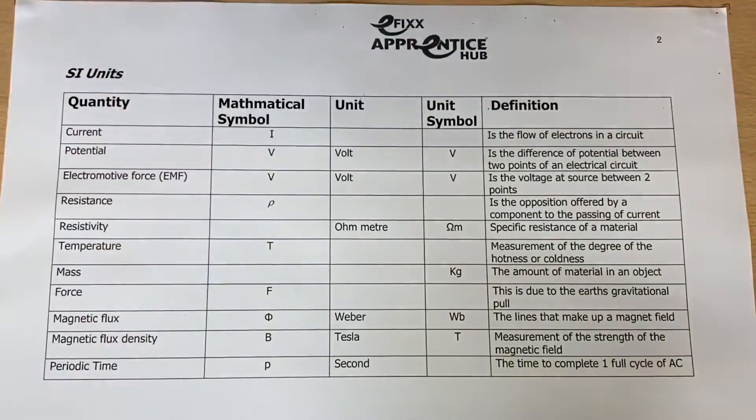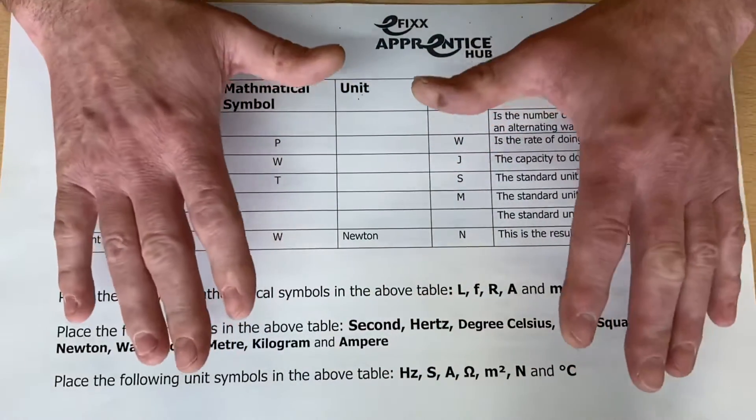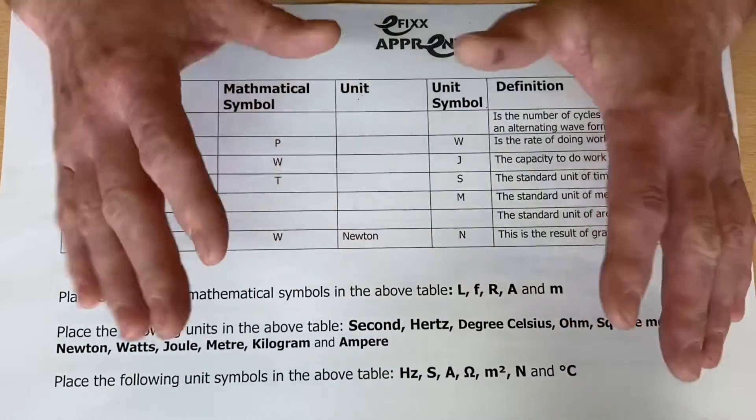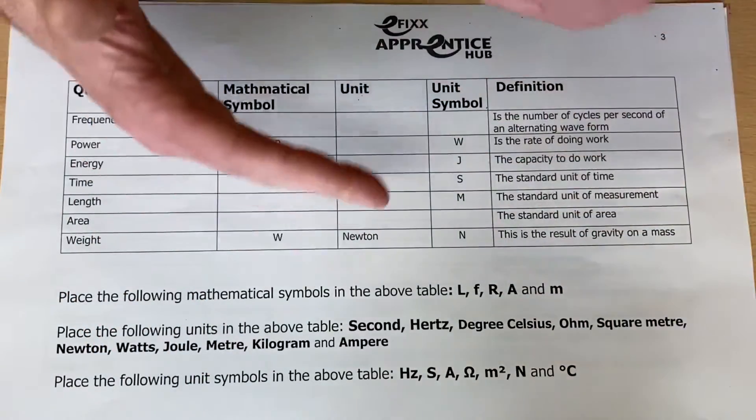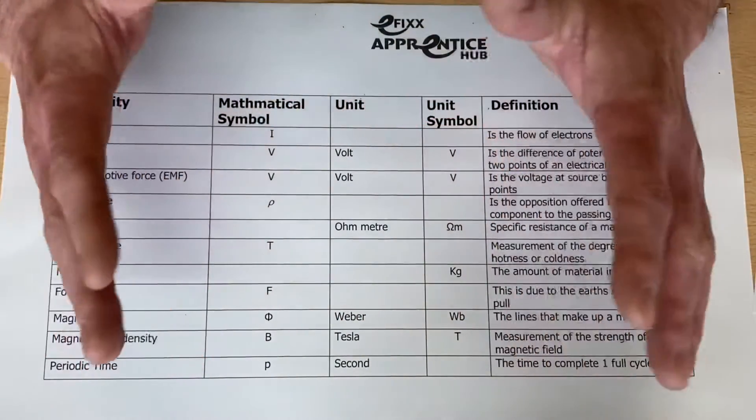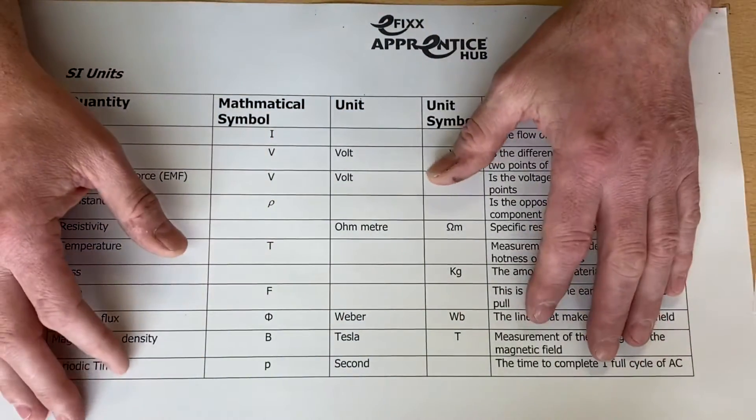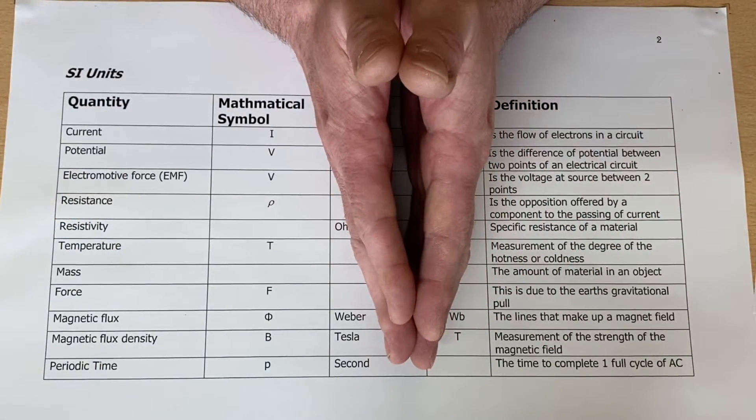This handout here and the second page that goes with it is always done at the very start of electrical science and principles and draws on knowledge from compulsory education, so your time at school. Now I don't expect us to know all of these two pages in detail at the end of the first lesson which is this section here on SI units, because I know throughout the entire electrical science and principles unit you will pick up these concepts.